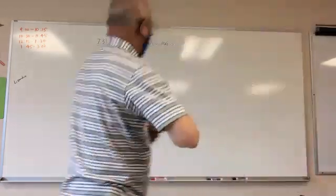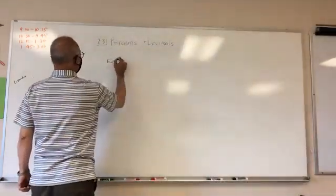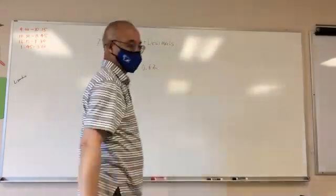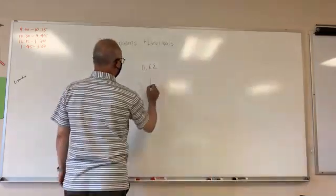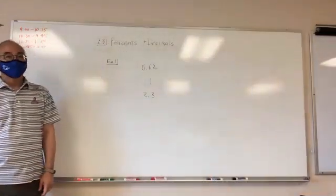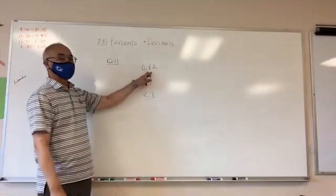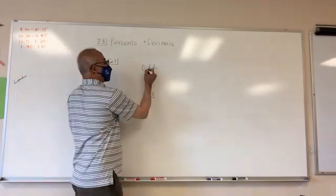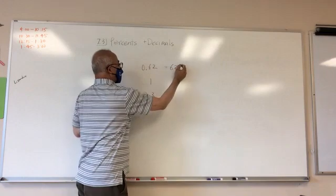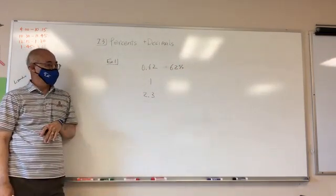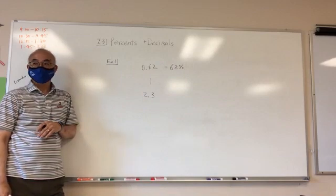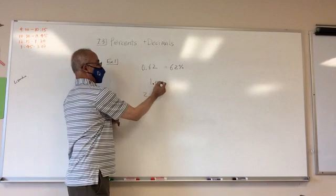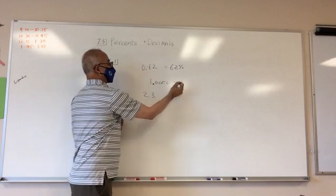Example number one: write the decimals as percent. So I have a decimal 0.62, 1, and 2.3. Cooper, how would I go this to percent? 62 percent. Right, so you move from here, you went over to say this is 62 percent. Number one, what percent is that? So it's 1.0, and you're going to move it from here one, two, so it becomes 100 percent.